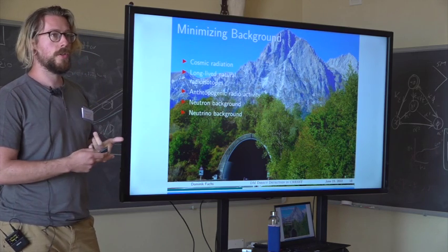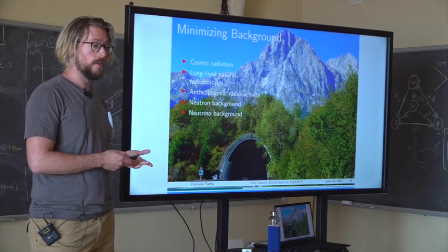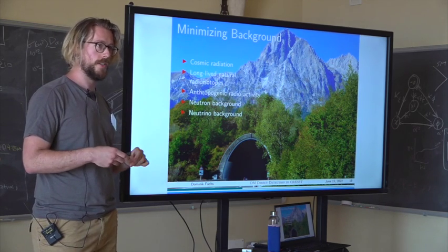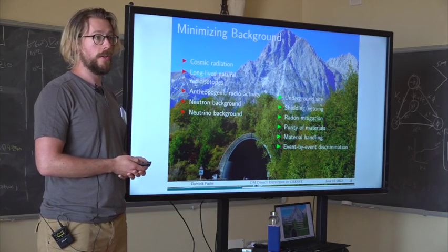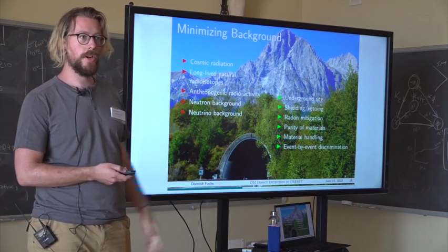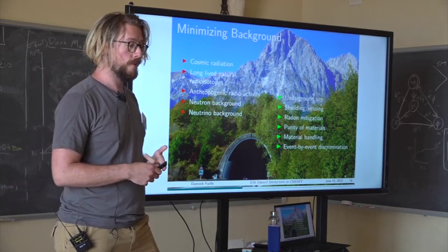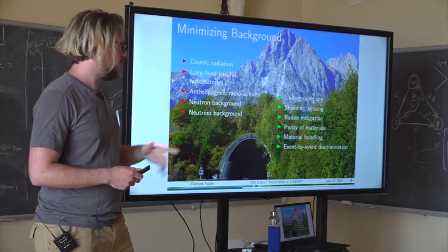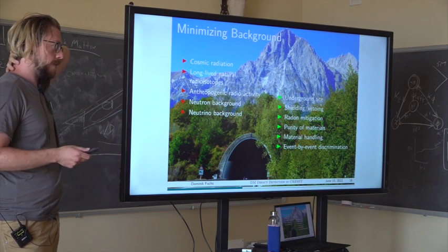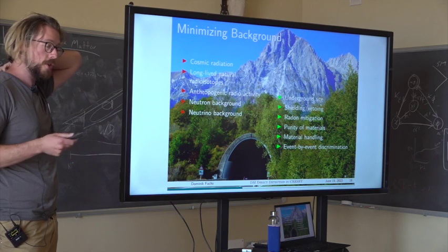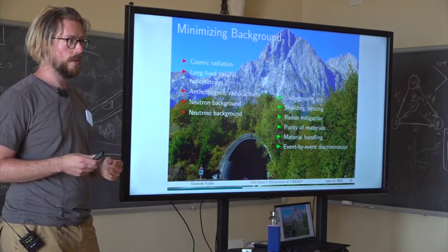We really need to keep our backgrounds under control. Typical backgrounds include cosmic radiation, long-lived natural radioisotopes, human-made radioactivity, and two very dangerous backgrounds for us: neutrons and neutrinos, because they mimic exactly the signal we'd expect from a dark matter recoil. What pretty much all big direct detection experiments do is go underground to shield against cosmic radiation, then add additional shielding and vetoing layers, check radiopurity of materials, and use event-by-event discrimination by reading out multiple channels such as heat and light.